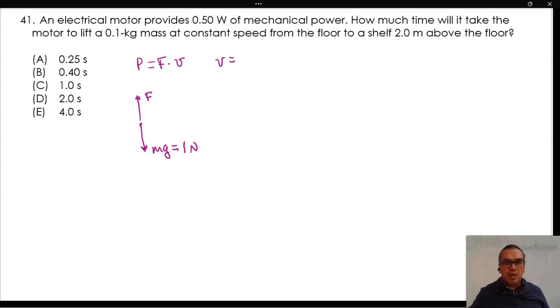Therefore, the speed is 0.50 watts divided by 1 newton, or 0.50 meters per second.